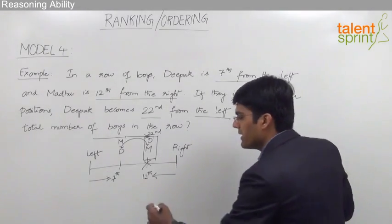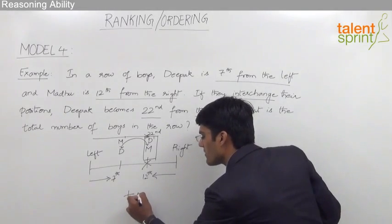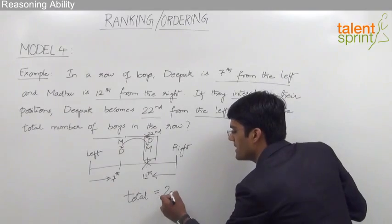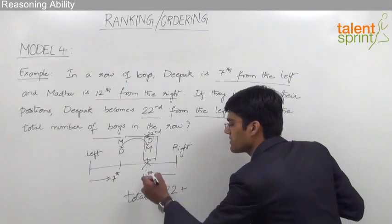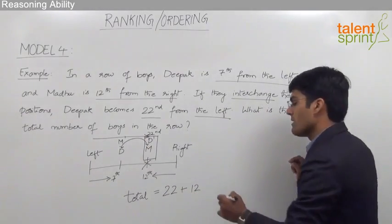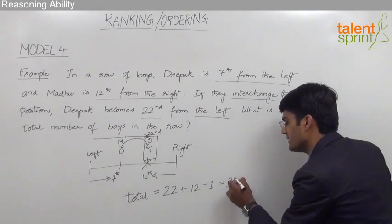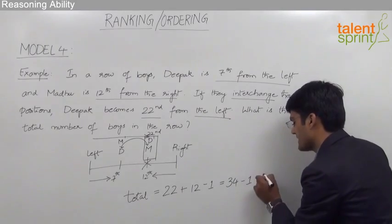So by taking that point, we can say that the total number of persons here should be the position from left end, that is 22, plus the position from the right end, which is 12, minus 1. So 22 plus 12 is 34 minus 1, that is 33.